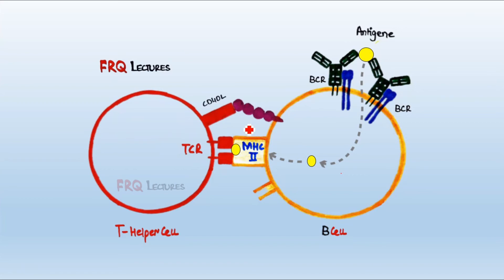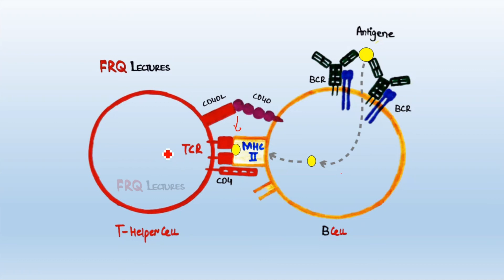For co-stimulation, on the left side you can see the CD40 ligand from the T helper cell, which interacts with the CD40 receptor on the B cell. These two interact to confirm the bonding between TCR and MHC. Additionally, CD4 comes into action and strengthens the bonding between TCR and MHC. There are two kinds of interaction: first, TCR-MHC interaction with the peptide fragment; then the co-stimulatory interaction via CD40 ligand and CD40 receptor, reinforced by CD4.